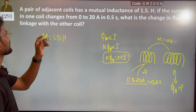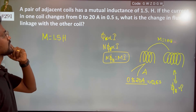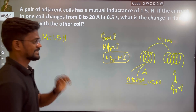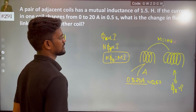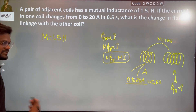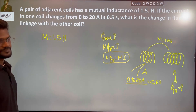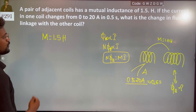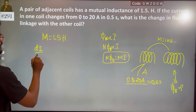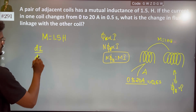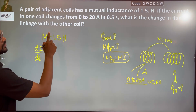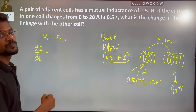What is the change in flux? The change in flux is in the other coil. There is a change in current which is di by dt, which is from 0 to 20.